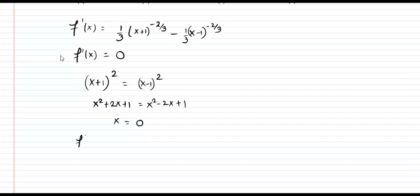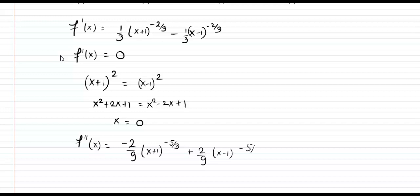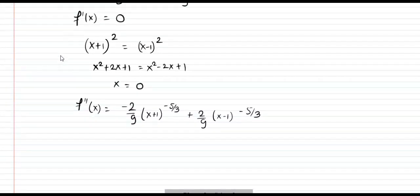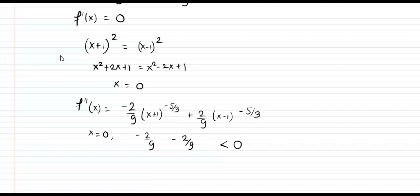Taking the second derivative: f''(x) = (-2/9)(x+1)^(-5/3) + (2/9)(x-1)^(-5/3). At x = 0, we get -2/9, which is negative.